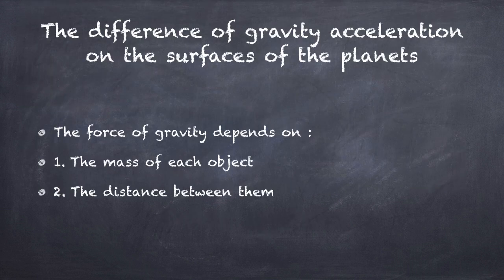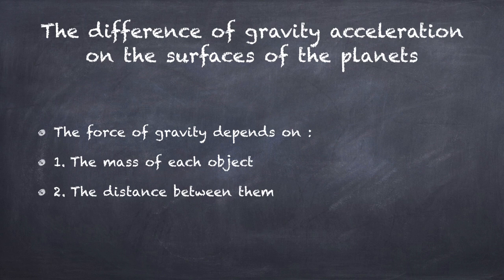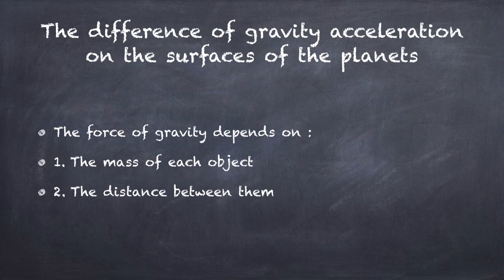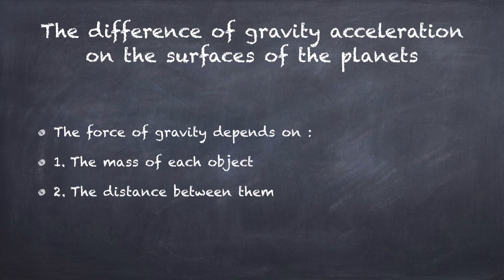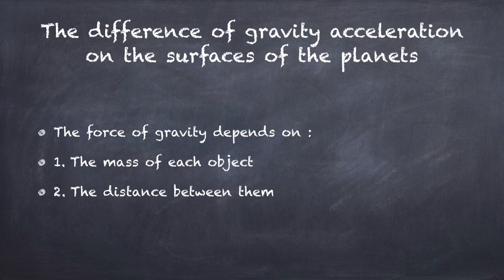The difference of gravity acceleration on the surfaces of the planets: The scientist Isaac Newton was the first one who discovered the Earth's gravity force when he was standing under a tree and he found an apple falling down to the ground. The force of gravity depends on the mass of each object, and the mass of each object are directly proportional, and the distance between them is inversely proportional.